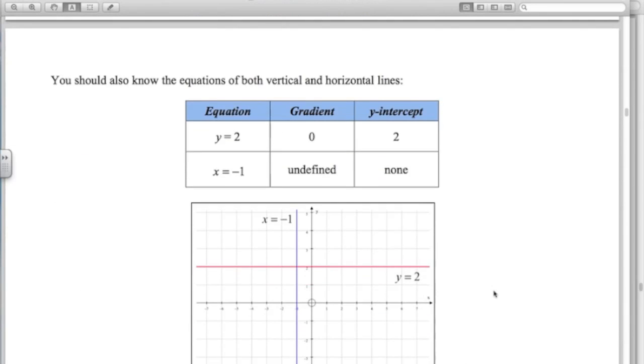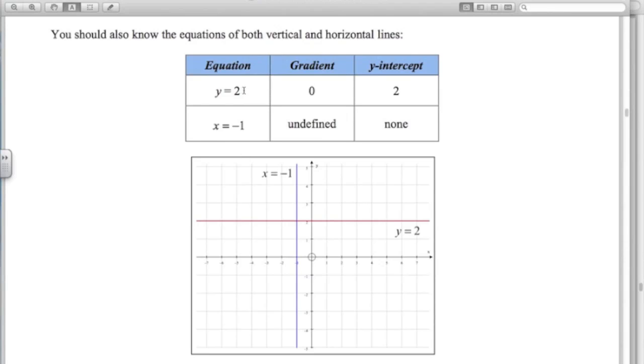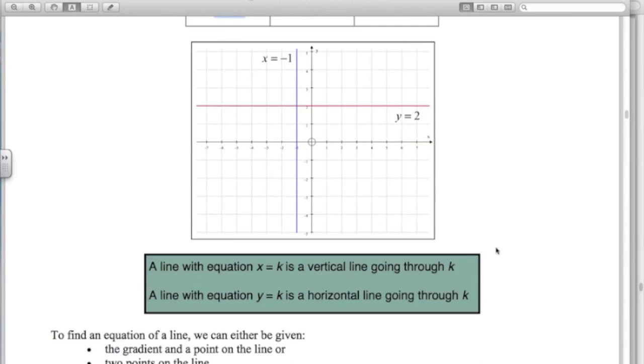It's also good to know the equations of these particular kind of lines, y equals 2. So there's no x in this one, just y equals 2. That's the red line here, going straight across, horizontal. The gradient is 0 and the y-intercept is 2. And another special type, x equals negative 1 or x equals anything, is just a vertical line going through that value of x. The gradient here is undefined. We don't say it's infinite, it's just undefined. And it has no y-intercept. So there's two particular special cases of lines that you need to know about.